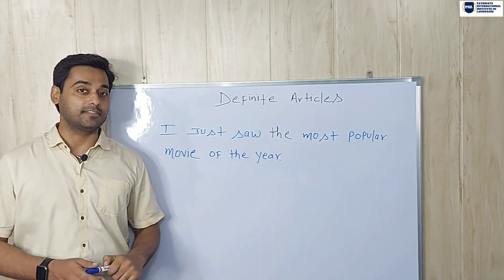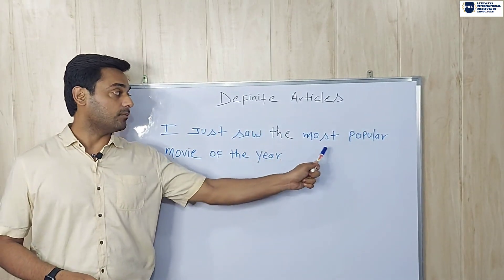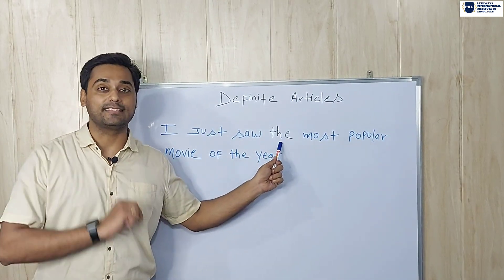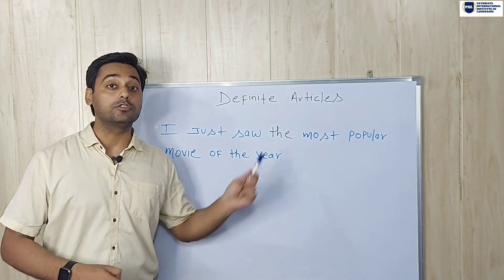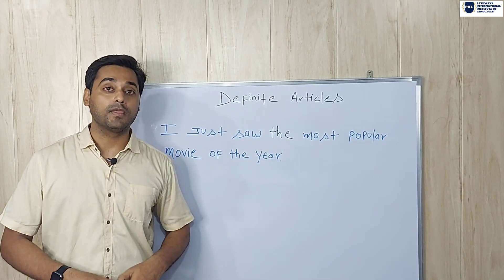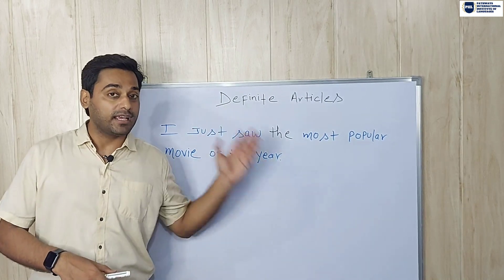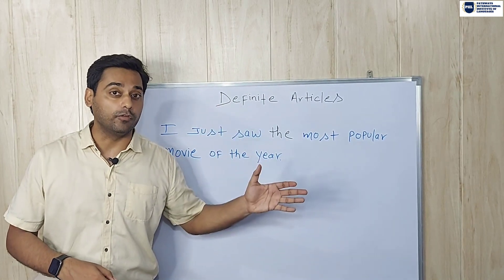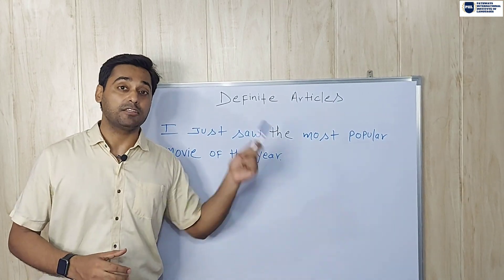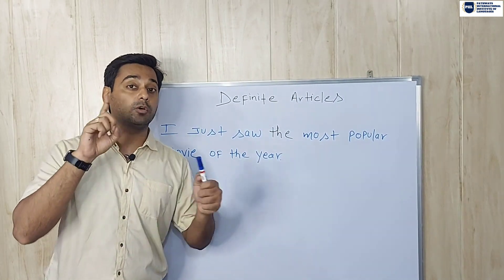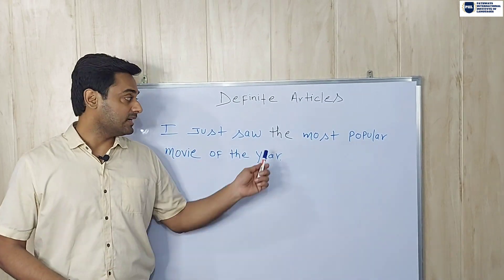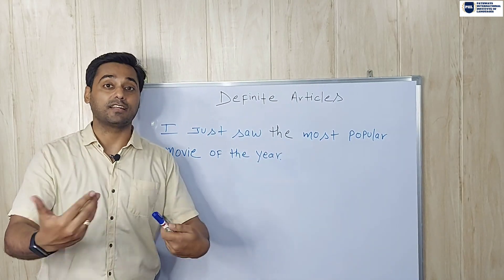Now look at this sentence: 'I just saw the most popular movie of the year.' Why did I use 'the' in this sentence? Why not 'a movie'? Because there are many movies, but here I'm talking about a specific, particular movie which I just saw. I'm specifying only one particular movie, which is the most popular of the year. That's why I have used 'the', which is a definite article.